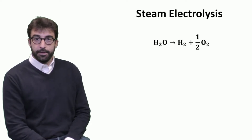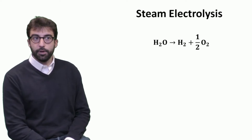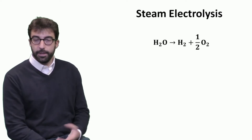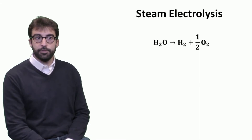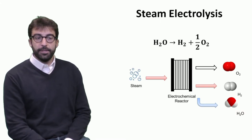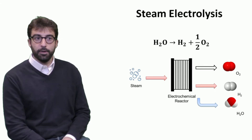In this unit we will try to go a little bit deeper on how we calculate the performance of steam electrolyzers. Going back to the reaction, electrolysis of steam and water is a molecule of water dividing into hydrogen and oxygen. Let's try to see what is exactly the device that operates.